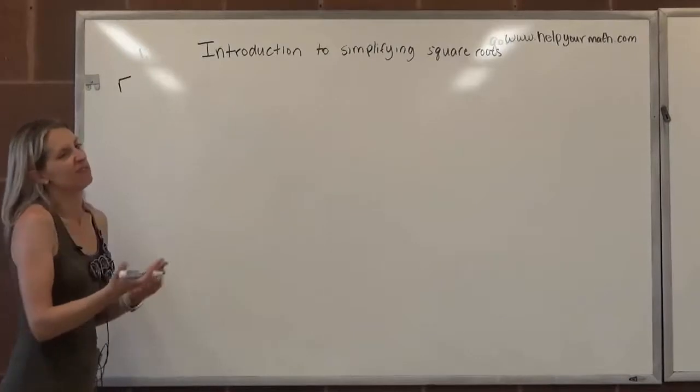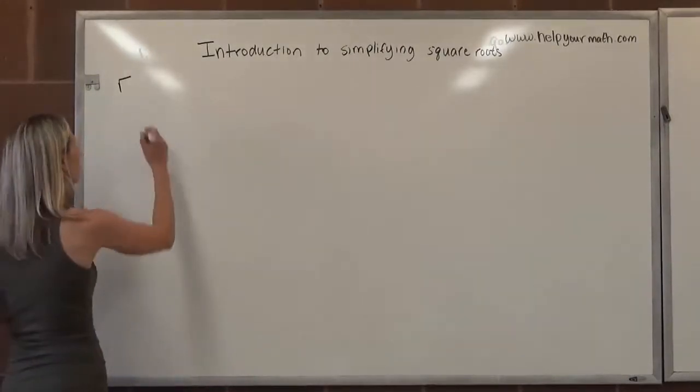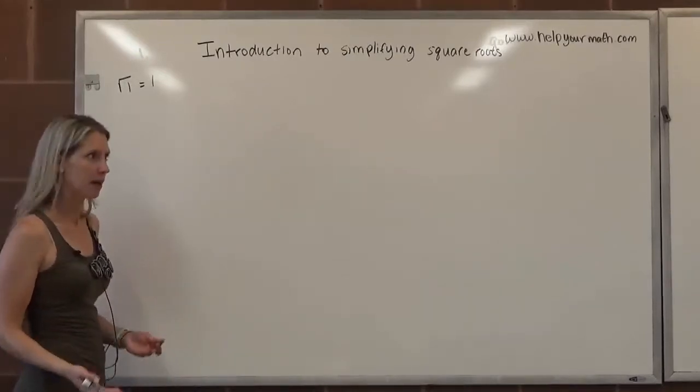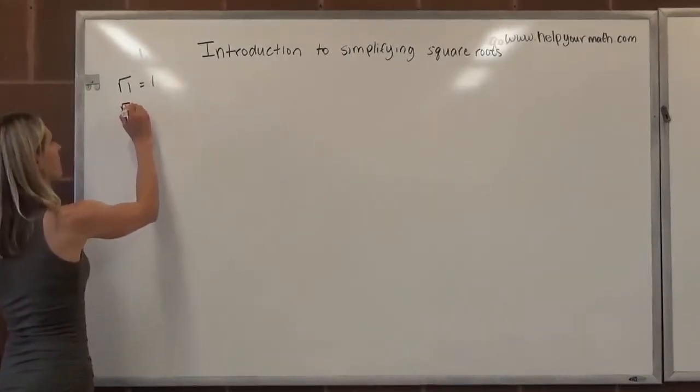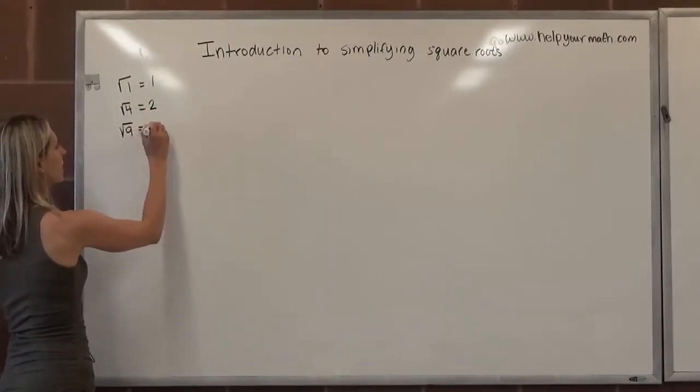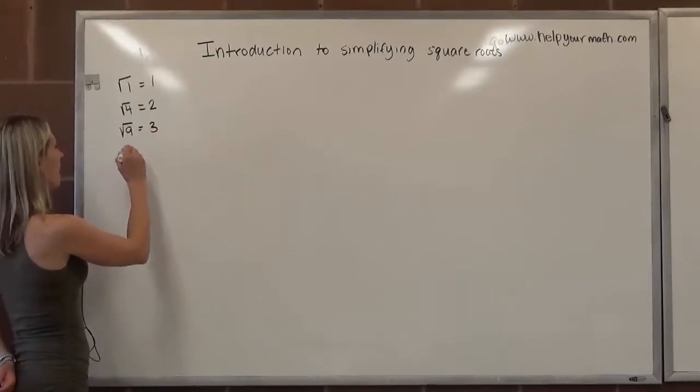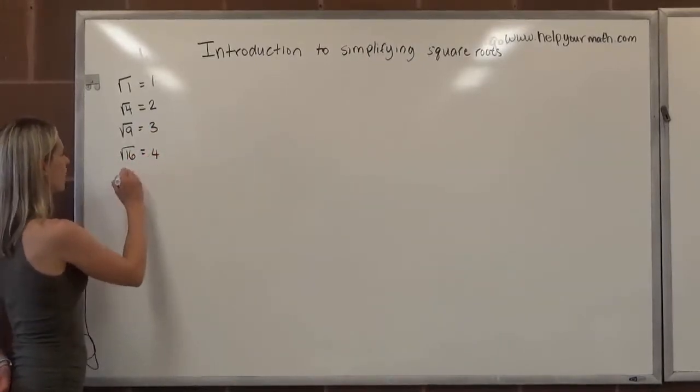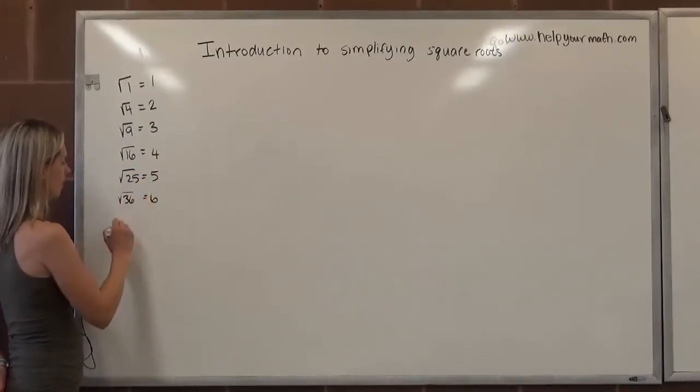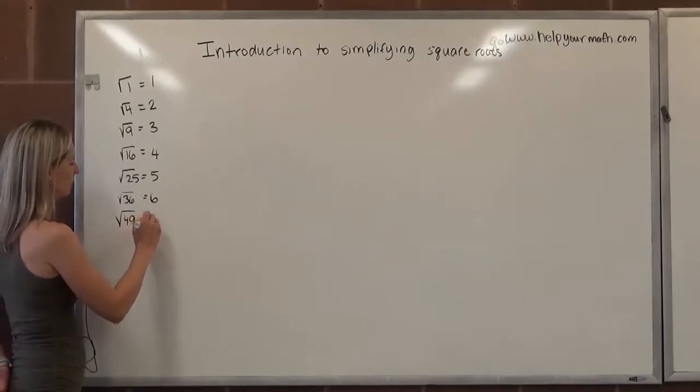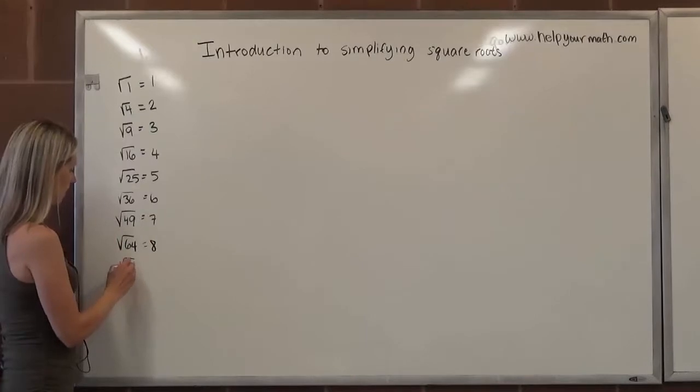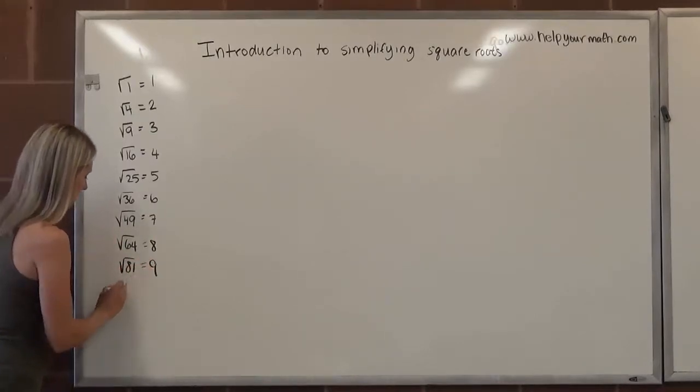The square root of one, we don't really care about it, but one is a perfect square so we should probably write it. The square root of one is one because one times one is equal to one. The next perfect square is four and the square root of four is two. The next perfect square is nine, which has a root of three. After that we have sixteen, twenty-five, thirty-six, forty-nine, sixty-four, eighty-one, one hundred.